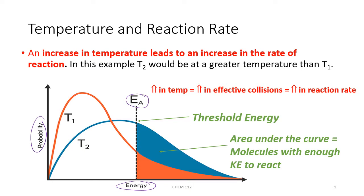The area below the curve represents the number of molecules that have a great enough kinetic energy in order to actually produce an effective collision. At the higher temperature T2, the probability curve is mostly shifted where there's a greater number of molecules, or a greater area under the curve, that exceeds the activation energy Ea. Whereas the red curve, or the lower temperature T1, there is a lesser area under the curve that represents the molecules with enough energy to actually react.